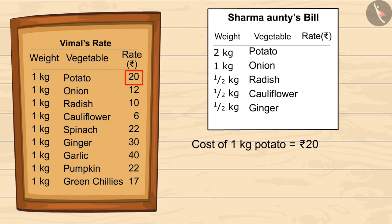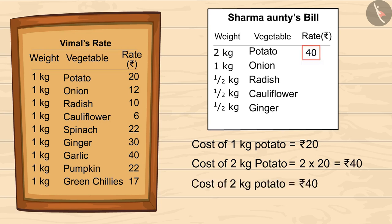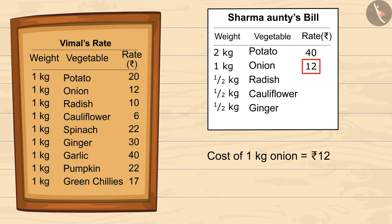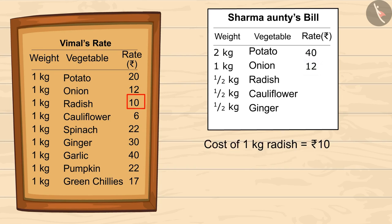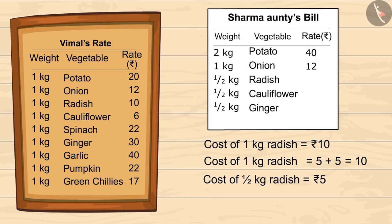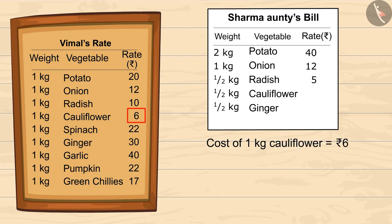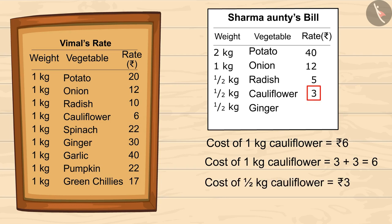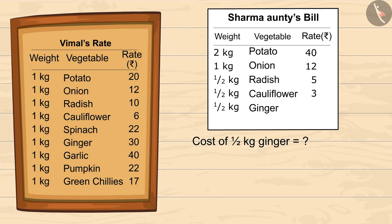According to Vimal's list, 1 kg of potato costs 20 rupees, so 2 kgs will cost 2 × 20 = 40 rupees. 1 kg onion is 12 rupees. 1 kg radish is 10 rupees, so half a kg is 5 rupees. Similarly, if 1 kg cauliflower costs 6 rupees, half of it will cost 3 rupees.